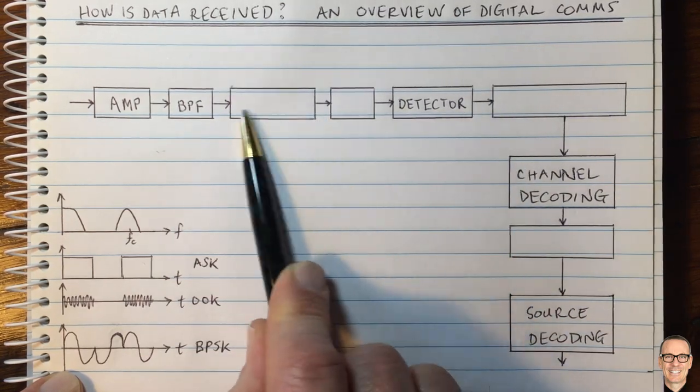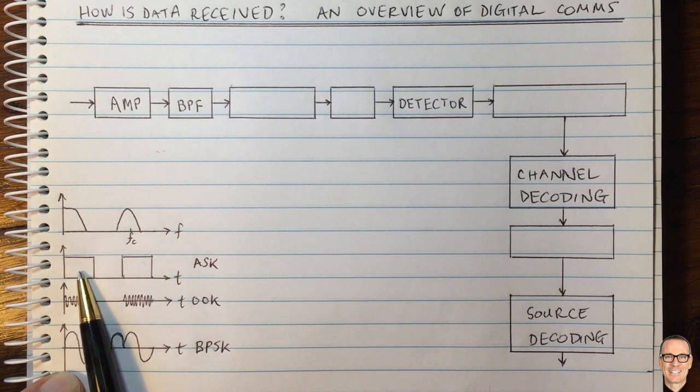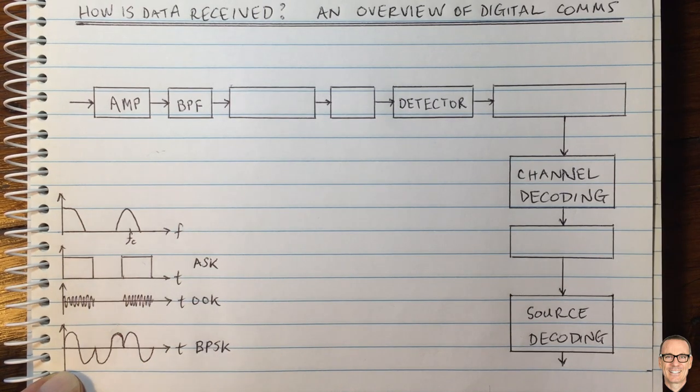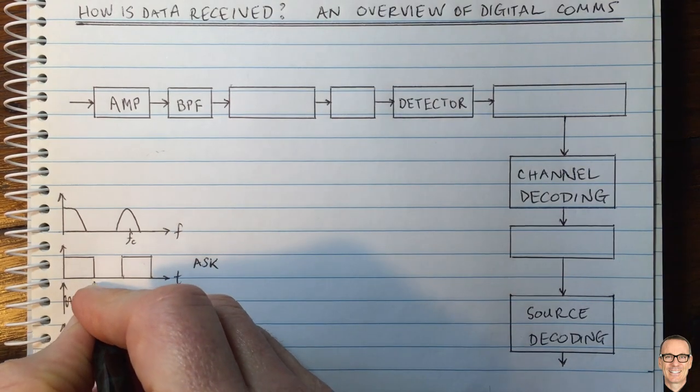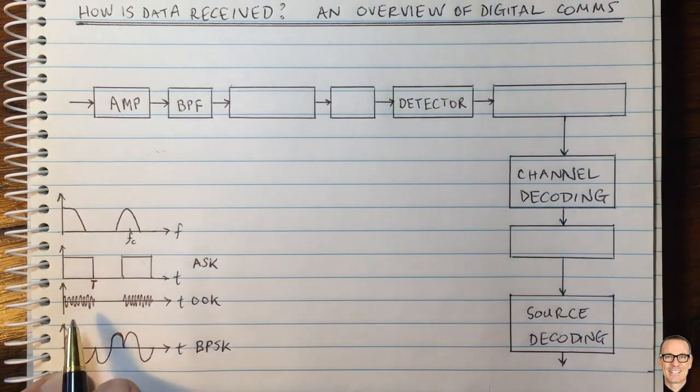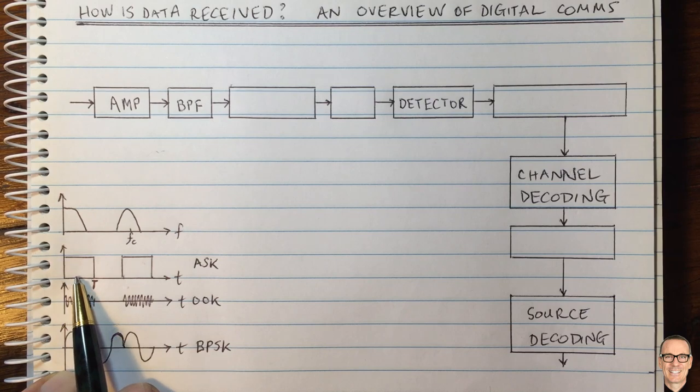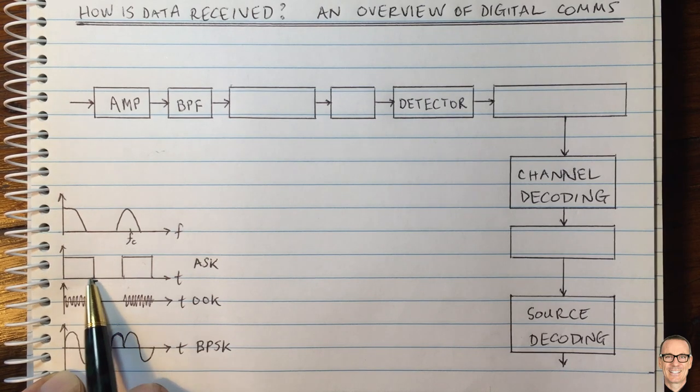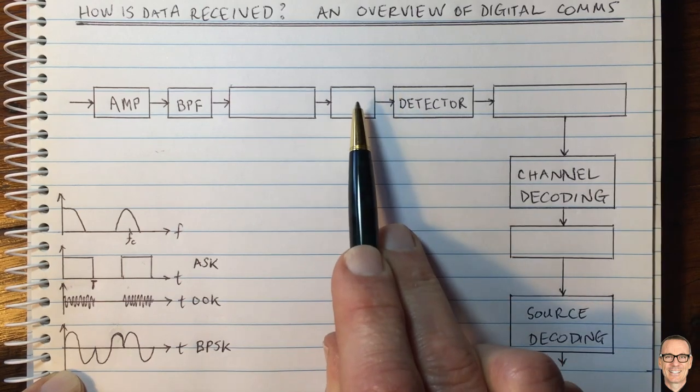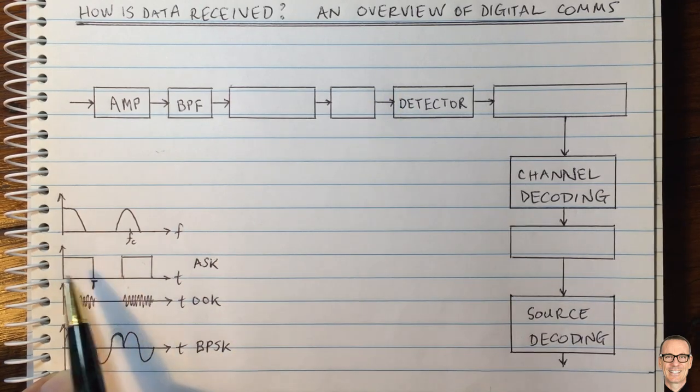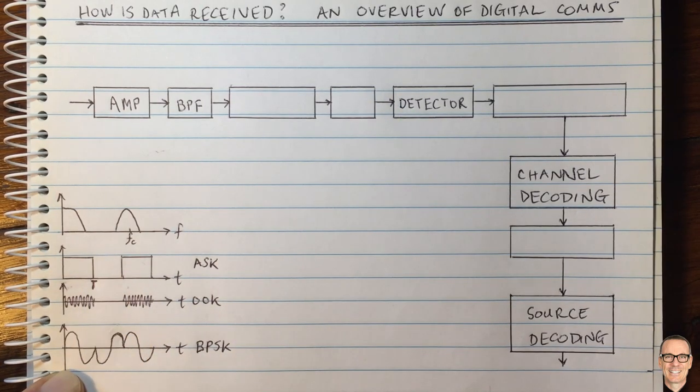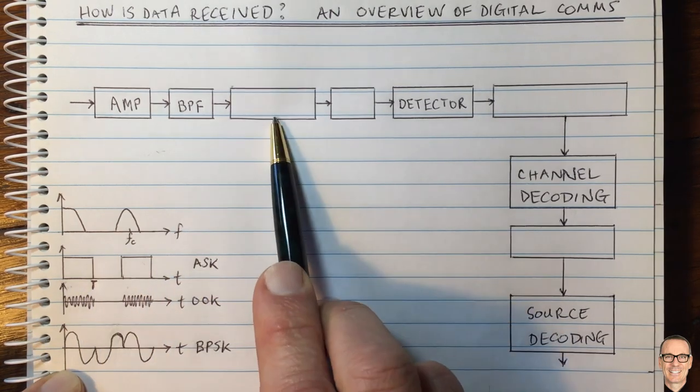The first thing we need to do is collect up energy from our signals over the period over which we're sending those bits. If this period is capital T, we need to collect and integrate that energy over that time period before we make our detection. To do that collection of energy, we have something called a matched filter.